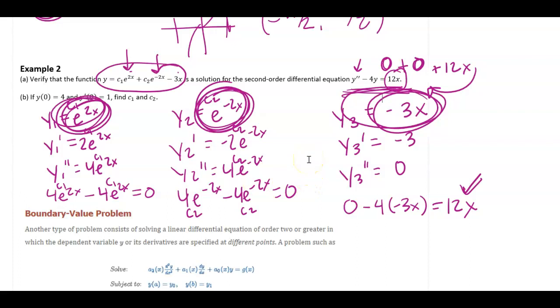All right, the second piece of this, and I'm going to just have to scroll down and use a little bit of some blank space here. But if I have that y of 0 is 4, and I believe this is y prime of 0 is 1, let's go ahead and find these pieces. So if I know that 4 is equal to c1 e to the 0, plus c2 e to the 0, minus 0, then I know that 4 is equal to c1 plus c2.